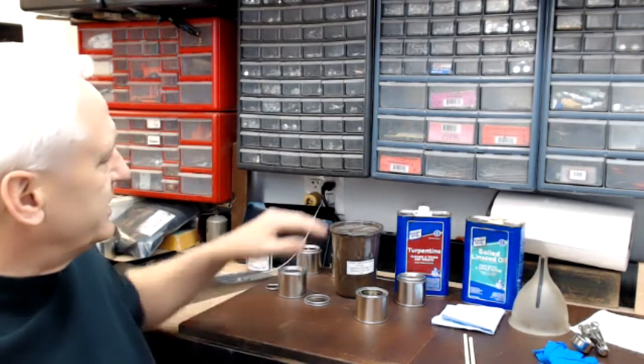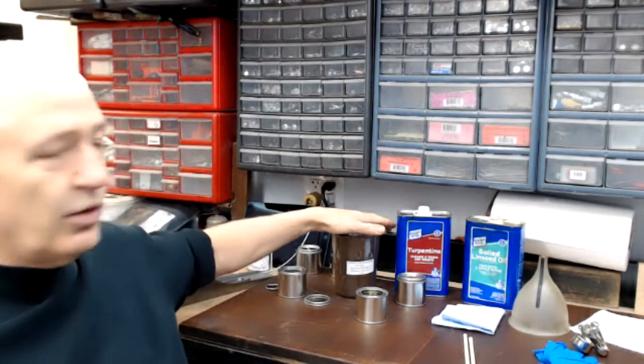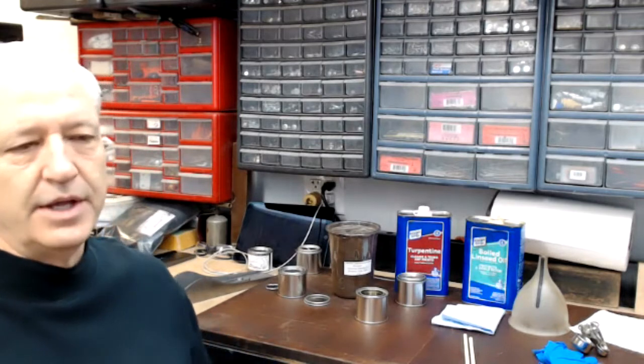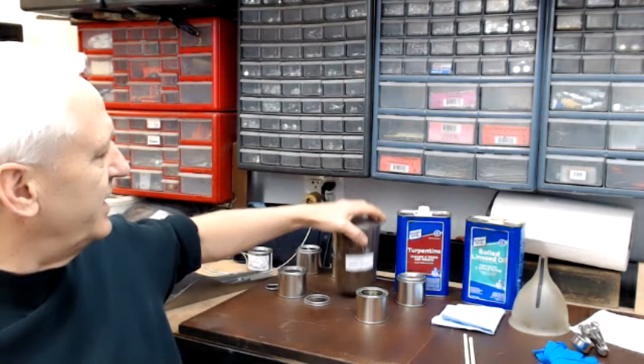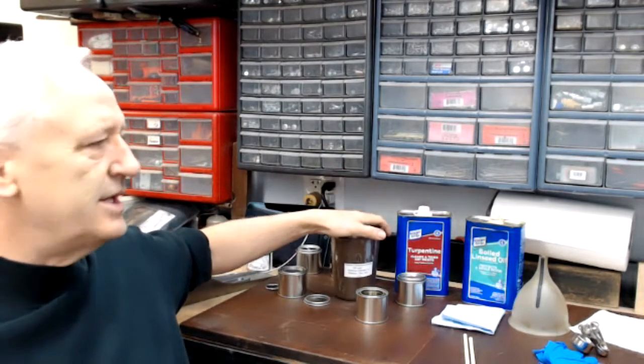So products for today: gilsonite, turpentine, and boiled linseed oil. Gilsonite or asphaltum, ground powdered asphaltum, is probably the most difficult product to acquire outside the U.S. In the U.S., there is an eBay seller that sells one pound quantities of gilsonite, which is going to be most people's lifetime supply. You'll never use that much.